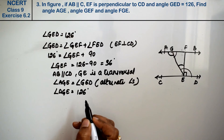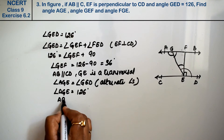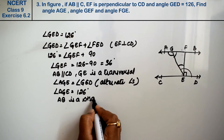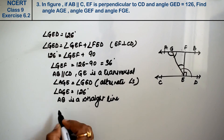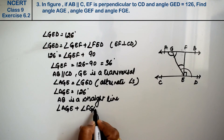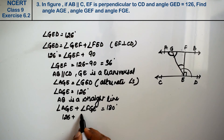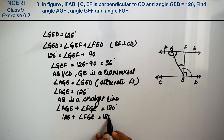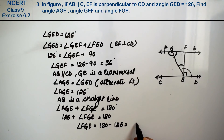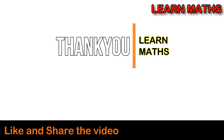Now we need to find angle FGE. AB is a straight line, so angle AGE plus angle FGE equals 180 degrees. Angle AGE is 126 degrees, so angle FGE equals 180 minus 126, which gives us 54 degrees. That is the answer.